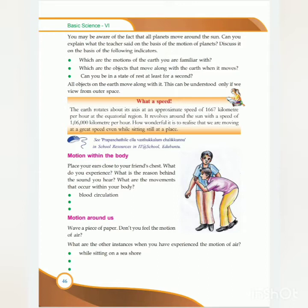Next question: which are the objects that move along with the Earth when it moves? Because all the objects on Earth are moving when the Earth is moving. Can you be in a state of rest at least for a second? No — it is impossible to be in a state of rest even for a second, because the Earth is rotating on its own axis and also revolving around the sun.